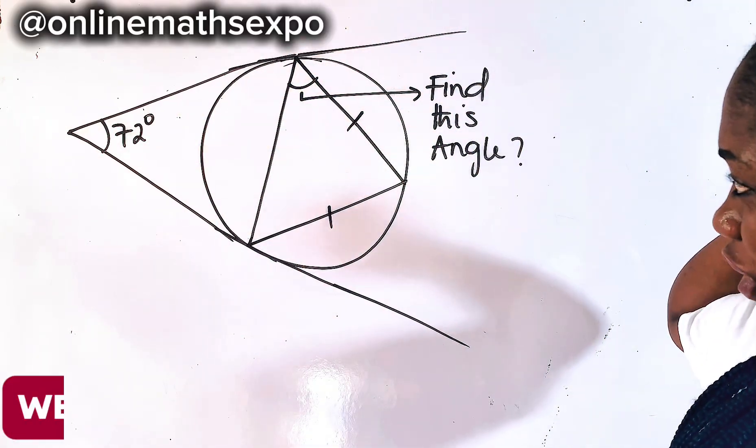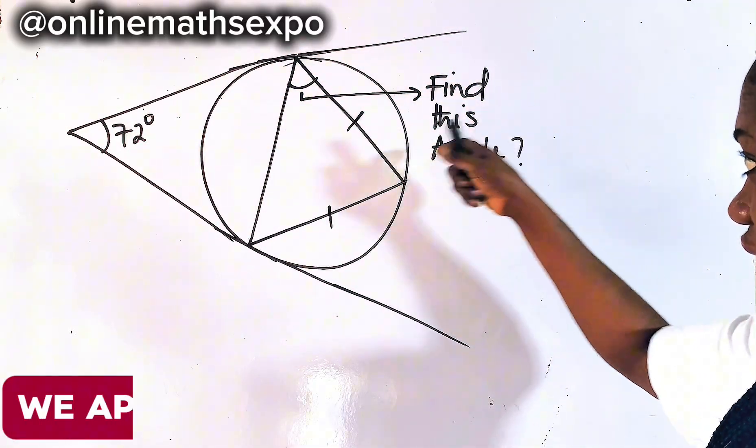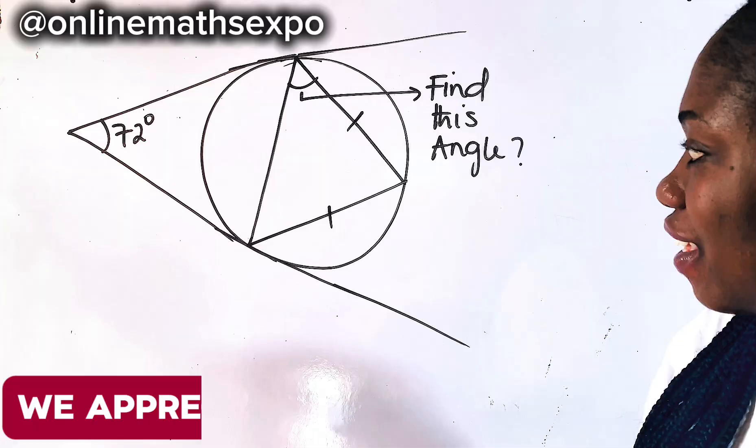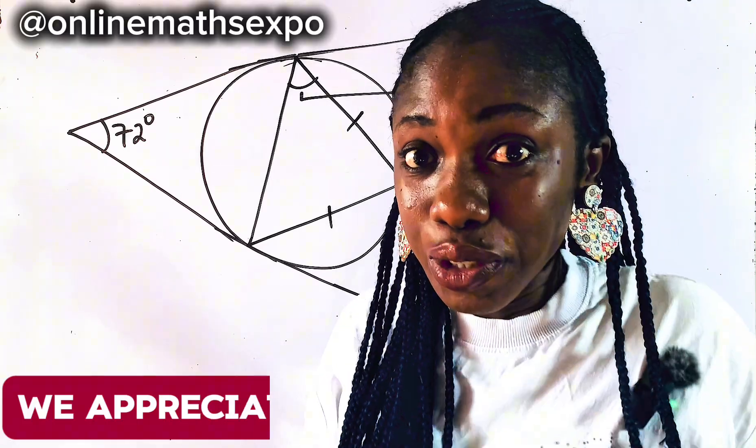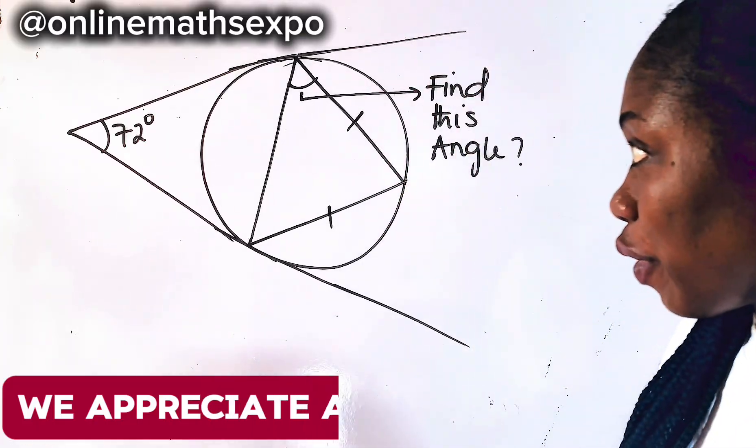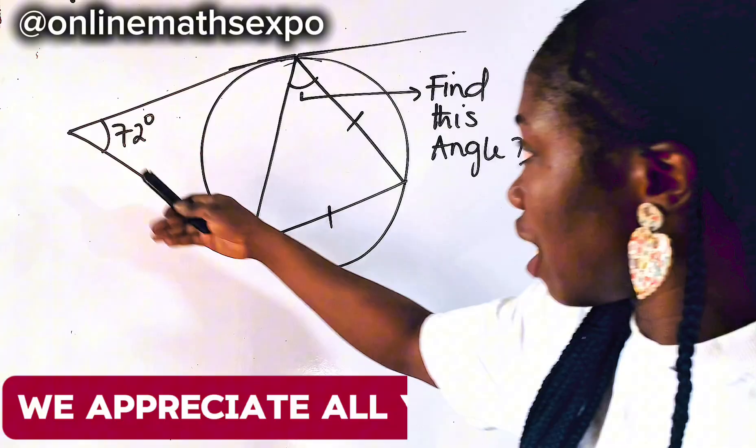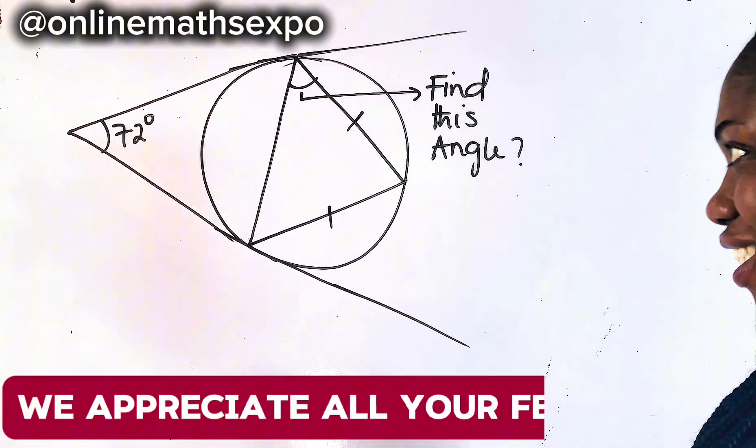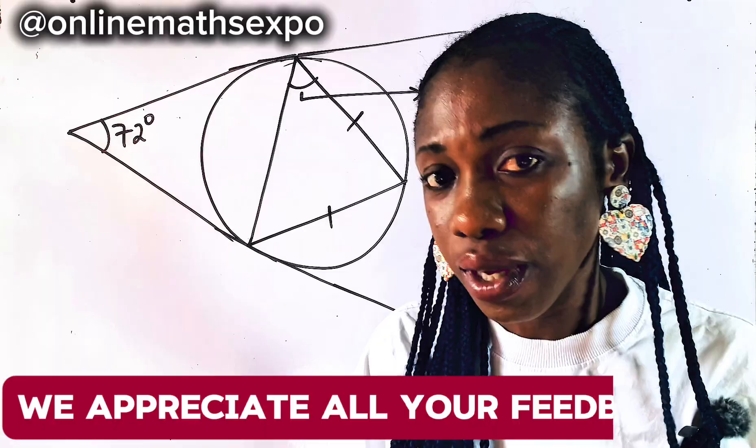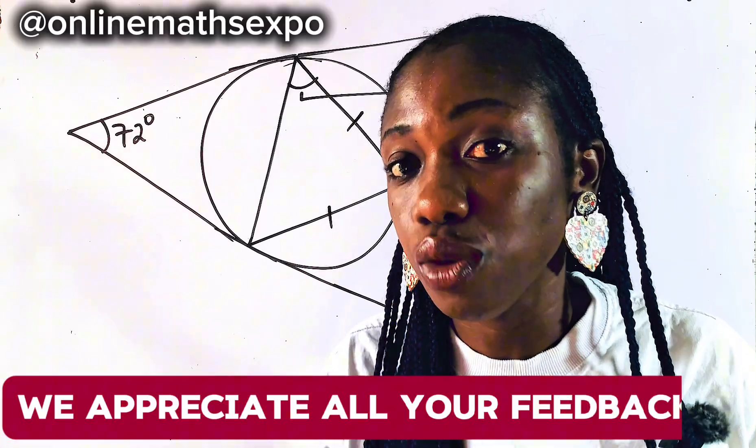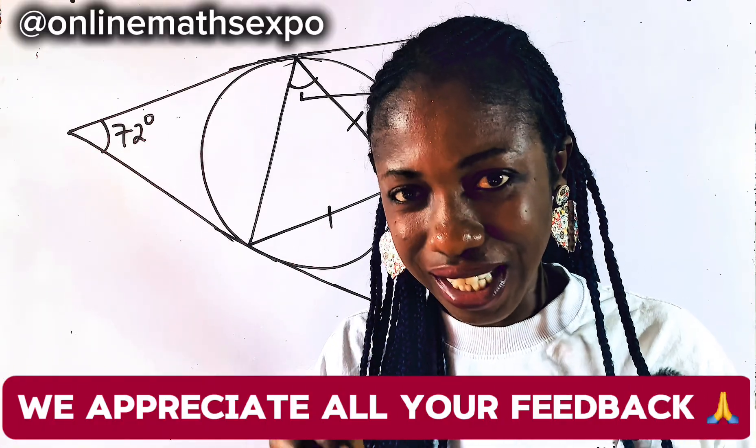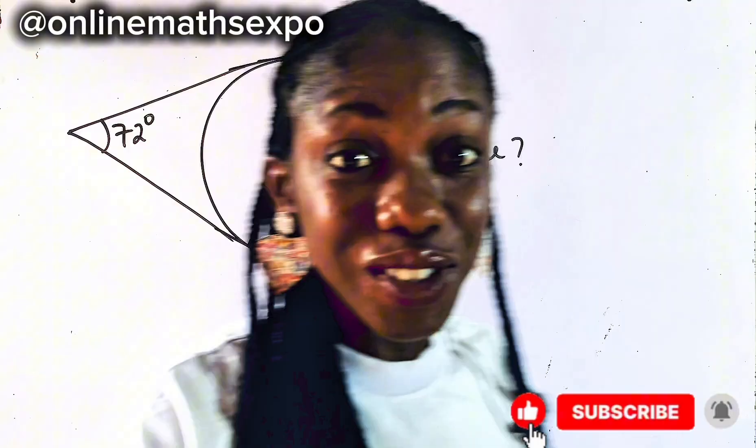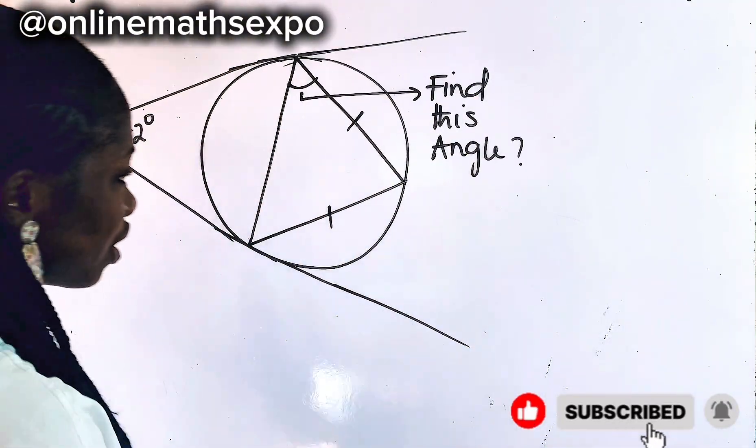We are given this tricky geometric question to find the missing angle, this angle right here. What do you think you should do? Nothing is being told. They didn't give us any definition about the question. They just asked you to find the missing angle. What you need to do is identify some circle properties. Identifying circle properties is the only key to answering this question.